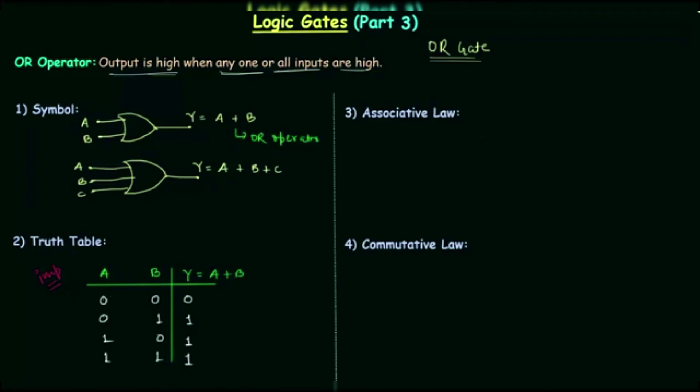Now we will move to associative law for OR gate. OR gate follows the associative law and it says A OR B OR C is equal to B OR C OR A. So this is the associative law and OR gate follows the associative law. You can easily verify this like we did in last presentation.